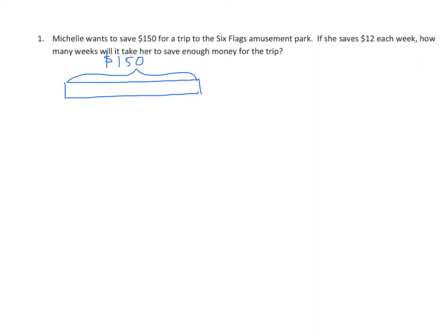Now, she saves $12 a week, but we don't know how many weeks, so I'm going to say each one of these is $12. We have one, two, I don't know how many. I'm going to put my ellipsis in there. And the last one's going to be a question mark. So we need to know how many groups of 12 there are.